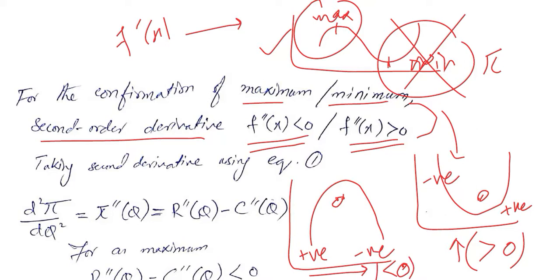This is how we understand the negativity of the second order derivative for a maximum and the positivity of the second order derivative for a minimum. These are counterintuitive: a negative second derivative indicates a maximum, and a positive second derivative indicates a minimum. We must not be carried away by these counterintuitive signs.